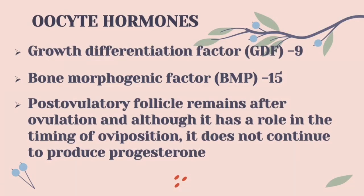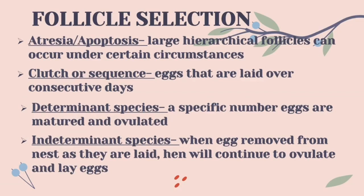The post-ovulatory follicle remains after ovulation, and although it has a role in the timing of oviposition, it does not continue to produce progesterone. The selection of the follicles has different types: atresia or apoptosis, which is the programmed cell death; the clutch or sequence; the determinant species, where specific numbers of eggs are matured and ovulated; and the indeterminant species, where if eggs are removed from the nest, the hen will continue to ovulate and lay eggs.